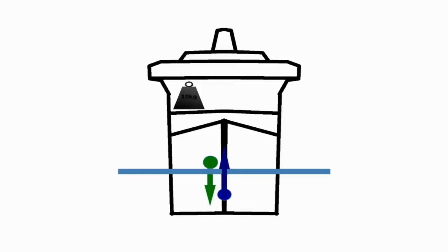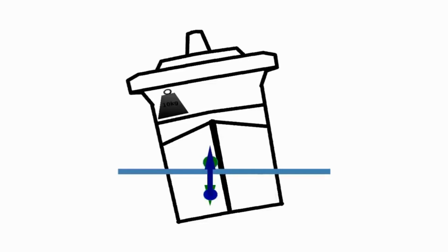As before, these two forces are creating a twisting moment, wanting to twist the ship over to one side. If we let those forces act, we can see that the ship is going to lean over until the forces are in line again — until the center of buoyancy is directly below the center of gravity again.